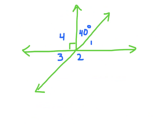Now we're going to figure out how much each missing angle measures using what we just learned. First, if I see a small square symbol, I know that's 90 degrees, so I can label angle 4 as 90 degrees. Then I look for straight lines. This straight line means these angles together make 180 degrees. I have 90 and 40, which is 130, so angle 1 has to be 50 degrees, because 130 plus 50 gives me 180.